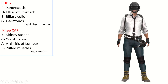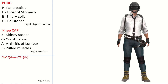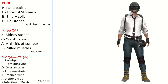Going further below, the character is wearing shoes and a tie. The mnemonic for the causes of pain in the right iliac region is CHOETAI — pronounced like 'shoe and tie.' C is for constipation, H is for inguinal hernia, O is for ovarian cysts, E is for endometriosis, T is for trapped wind or gas accumulating in the intestine, A is for appendicitis, and I is for pelvic infection.